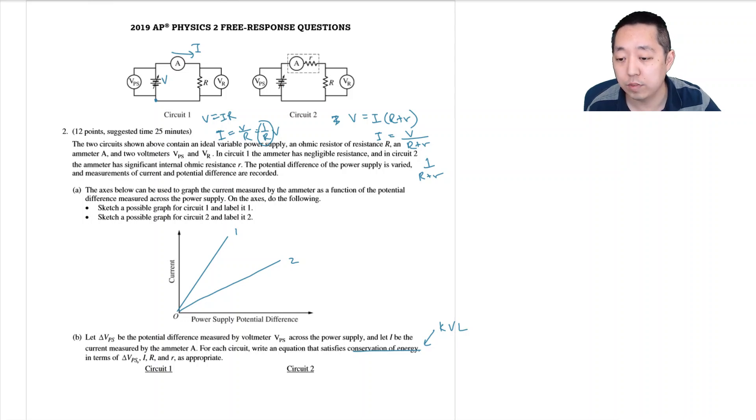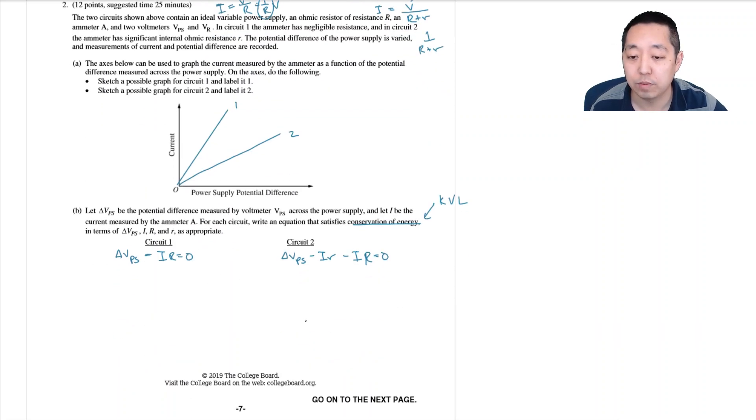So we go up a voltage V delta VPS then here I drop an IR minus IR would equal zero. And then here is the same thing, I have delta VPS the power supply voltage, then I'm going to drop across IR little r and then I'm going to drop across big R. So you can leave them like this, this satisfies conservation of energy. You can simplify this a little bit but otherwise that's fine.